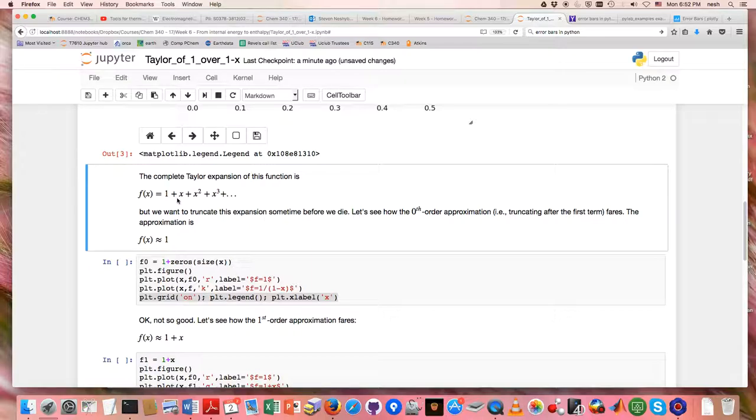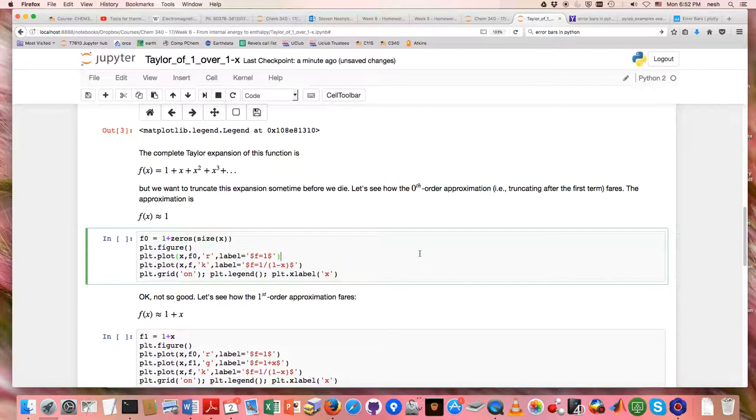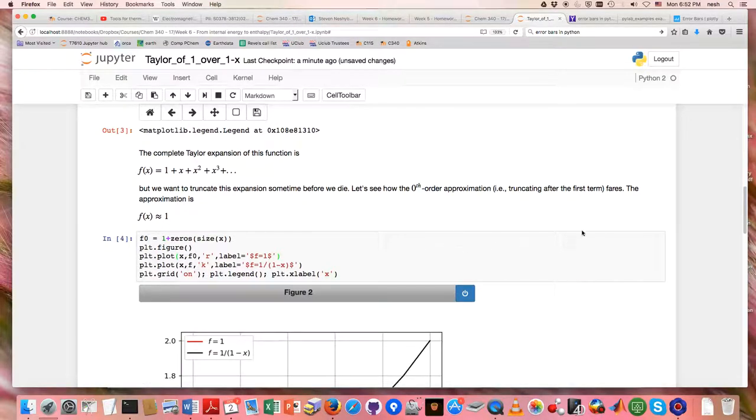But we don't want to just carry out that expansion forever. We want to see where we can truncate it. And so the first place to truncate it would be right after that 1, and that's the zeroth order approximation. So we would say f of x is just about equal to 1. And let's see how that looks.